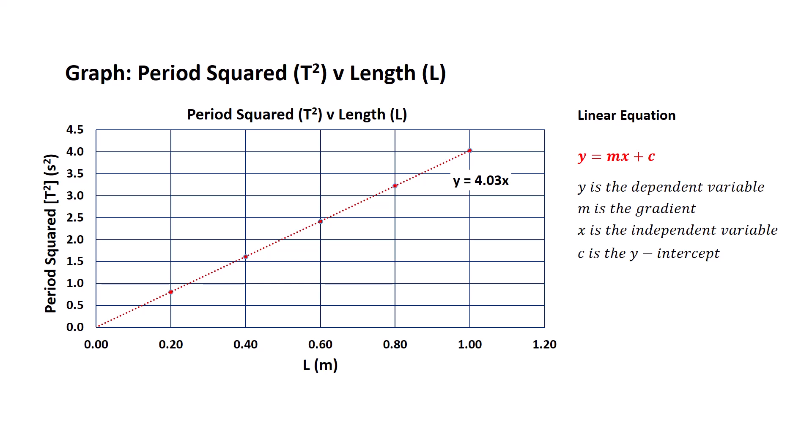First of all, let's look at our dependent variable. We know the dependent variable is shown on the vertical axis and it is the period squared, so we substitute T squared as the dependent variable. Next we need to look at what is the gradient. Excel has calculated the gradient for us and it has a value of 4.03. The next step is to work out the x value, which is the independent variable. The independent variable is shown on the horizontal axis, so that's the length in meters, so we substitute L as our independent variable.